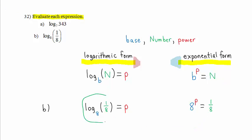So the value of this expression, log base 8 of 1/8, is p, where 8 raised to the p power is 1/8. We must figure out what the value of p is. The value of p is negative 1, because 8 raised to the negative 1 power means 1 divided by 8 raised to the positive first power. That's 1/8. Therefore, the value of the expression, log base 8 of 1/8, is negative 1.